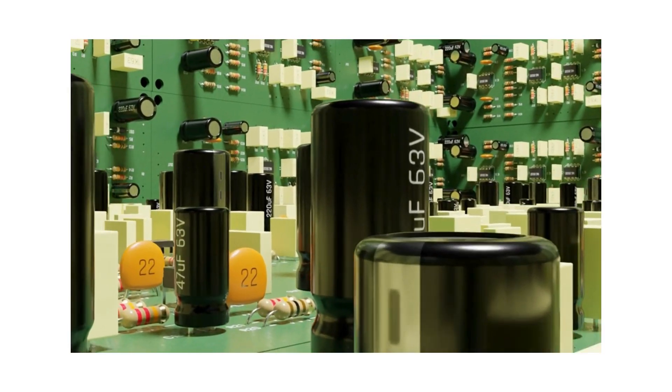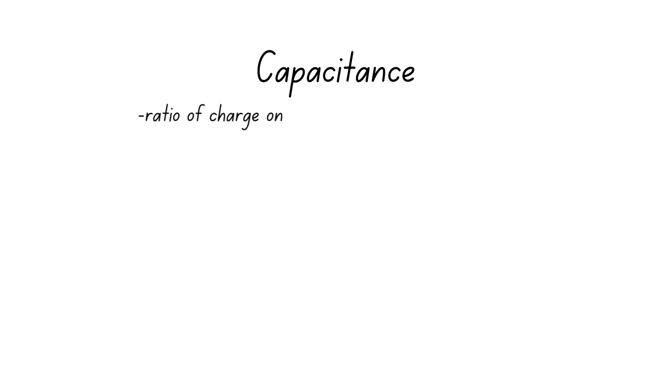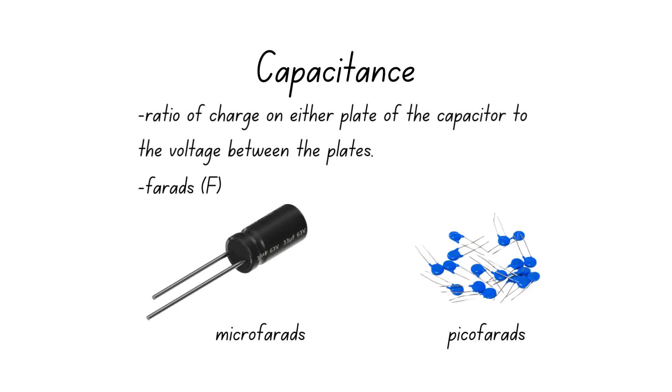All capacitors have a property known as capacitance and it is defined as the ratio of charge on either plate of the capacitor to the voltage between the plates. Capacitance is measured in units called farads and typical capacitance values are in the range of micro to picofarads.